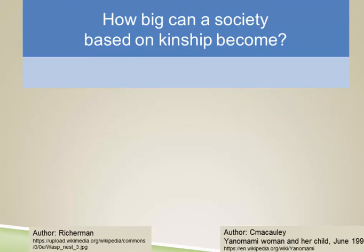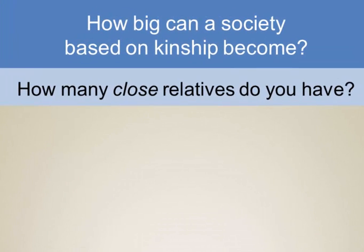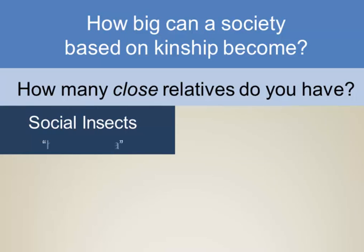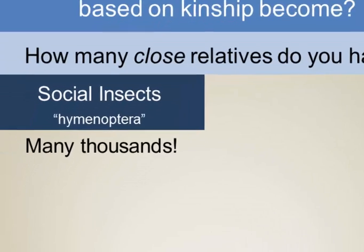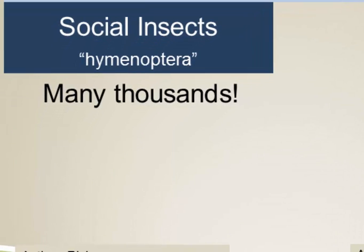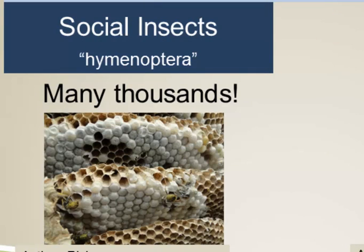We can discuss this in terms of the question, how big can a society based on kinship become? And the answer is going to be, how many close relatives can you have, say at the level of first cousins or closer? Now among some of the social insects that are classified as Hymenoptera, they have a rather different system of inheritance, and as a result they're able to maintain closer relatedness. They also have a different system of reproduction than humans, and as a result, some of the Hymenoptera societies can get very large and have thousands of close relatives, like this nest of wasps.